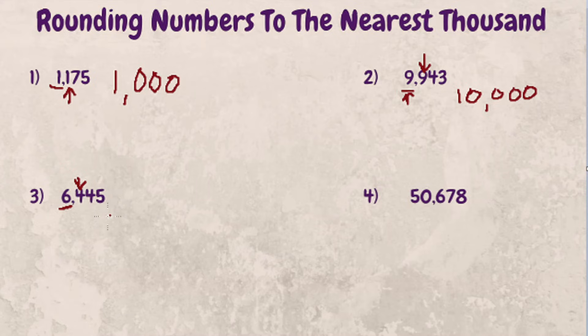Four or less we round down, so that means that six thousand four hundred and forty-five is closer to six thousand than seven thousand.